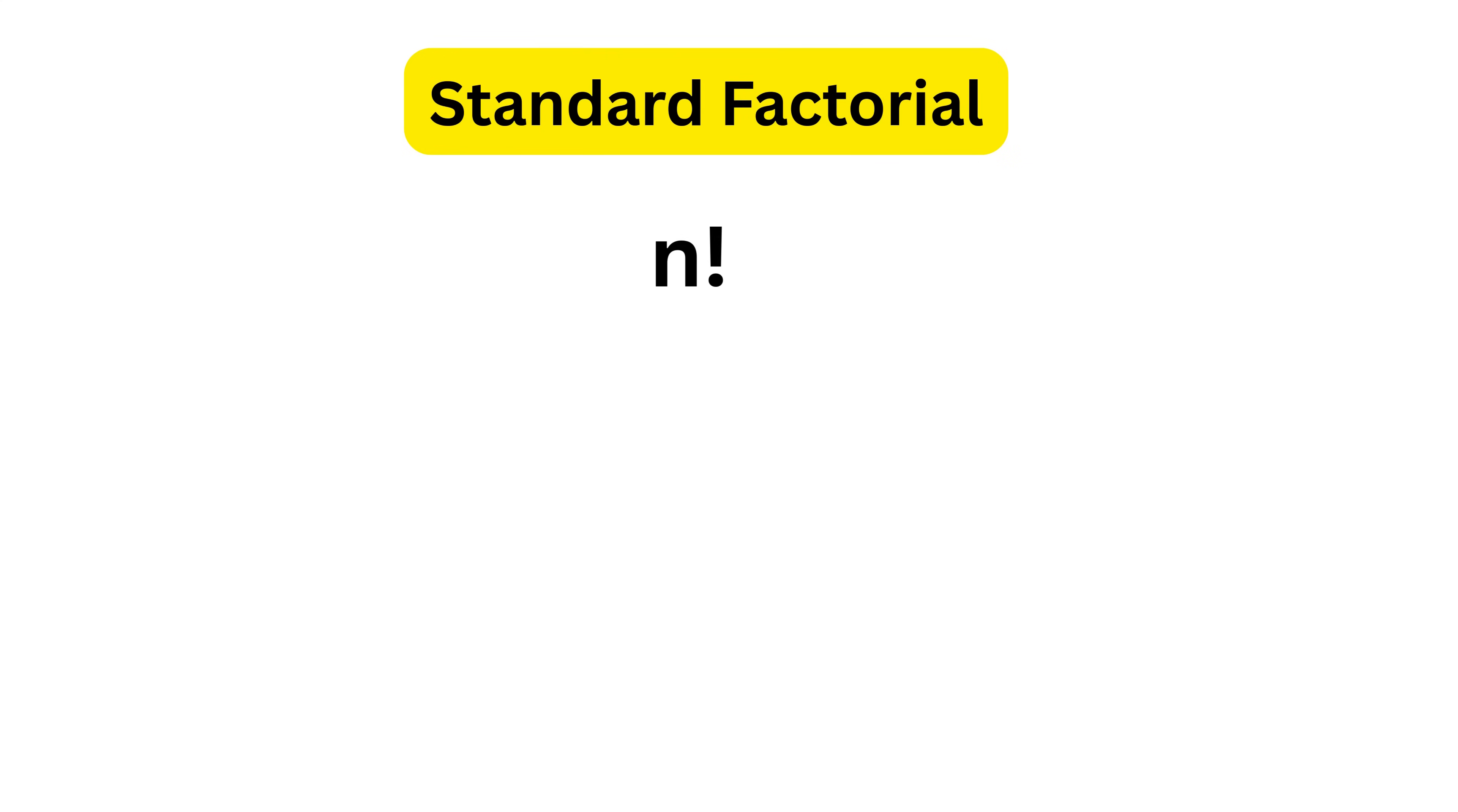This, we all know, is a standard factorial where we put an exclamation mark in front of a number. Like 4 factorial equals 4 times 3 times 2 times 1, which is equal to 24.